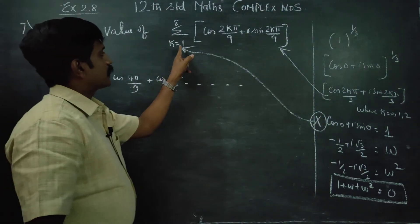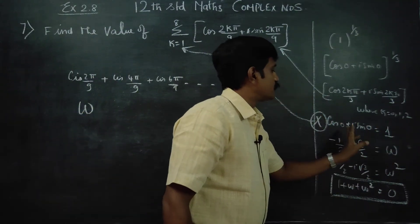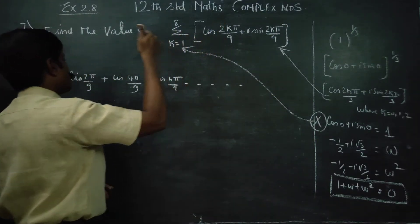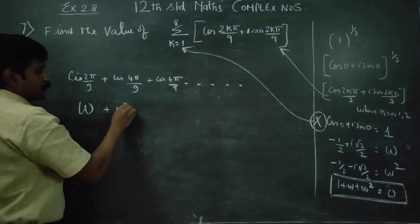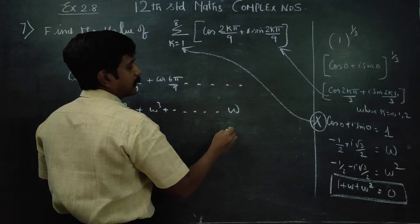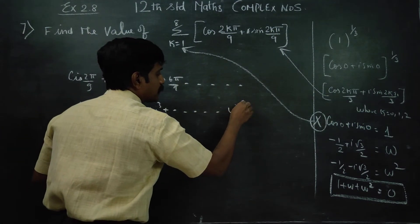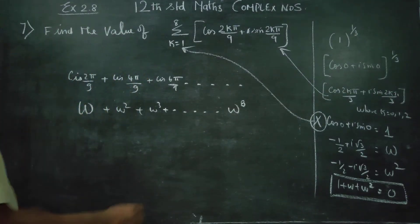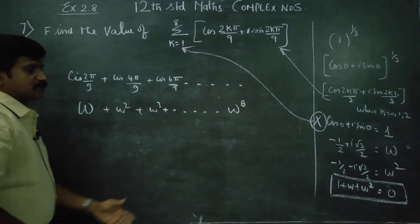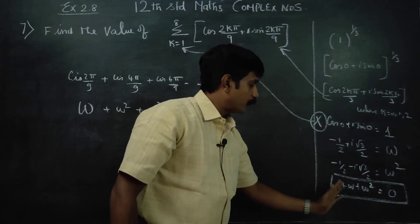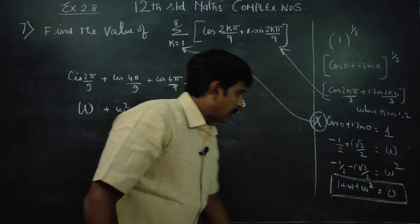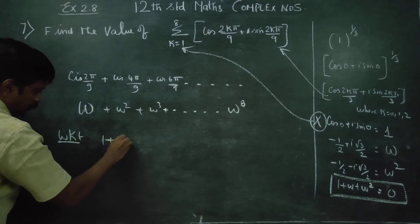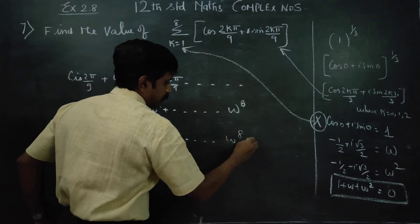Starting from k equal to 0 gives 1, k equal to 1 gives omega, k equal to 2 gives omega square, k equal to 3 gives omega cube, and so on up to omega power 8. We have to find the answer for this sum. The rule for nth root of unity: for cube root of unity, 1 plus omega plus omega square equals 0.